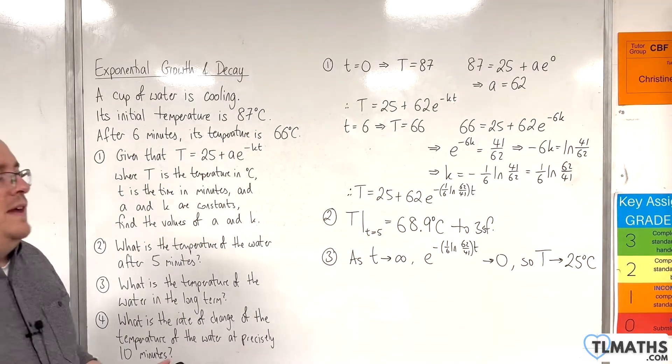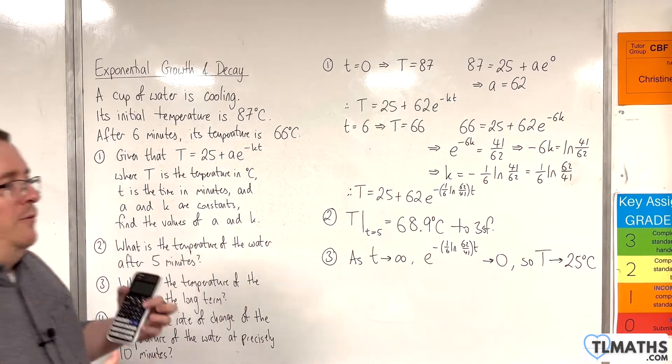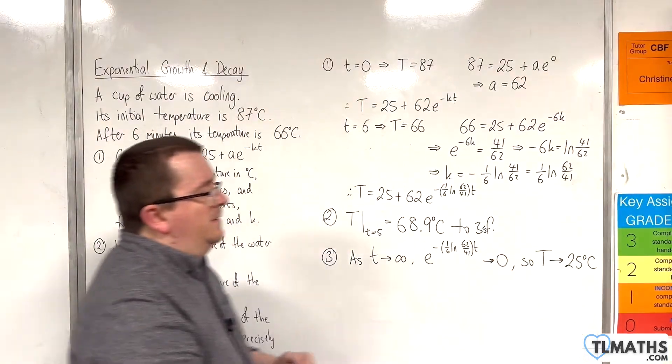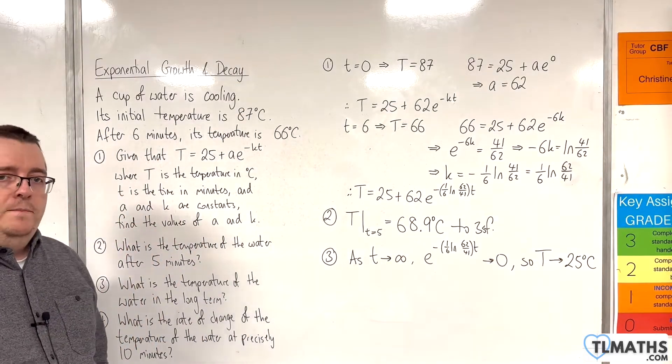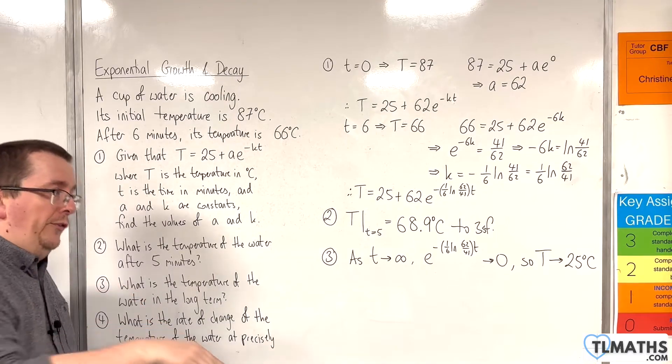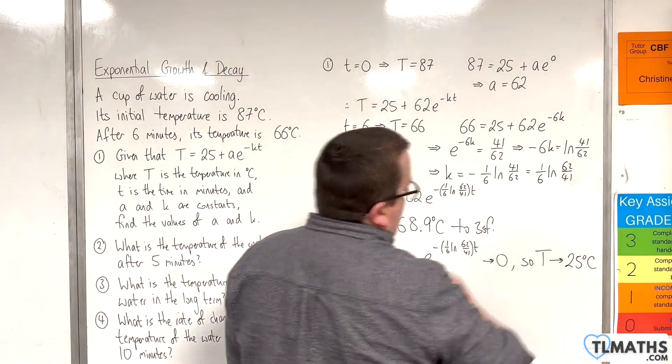You could think of that as the temperature of the room. So your cup of tea, or cup of water, you brew your cup of tea, you put it on the side, and slowly the temperature will drop, and it will tend towards room temperature. Okay? So that's relatively how you should see that.